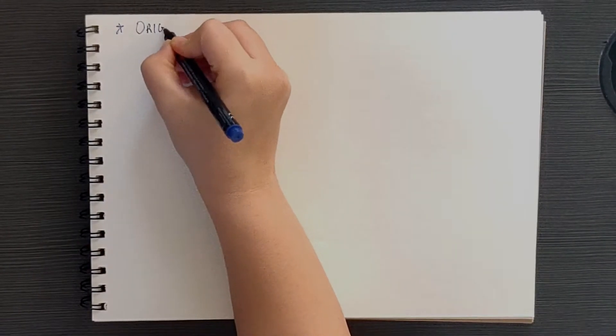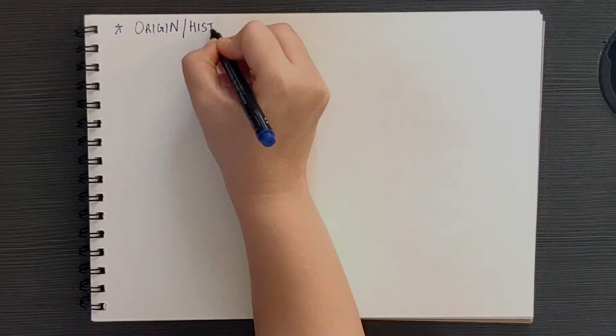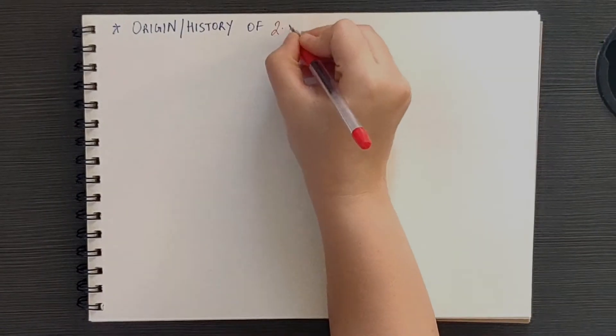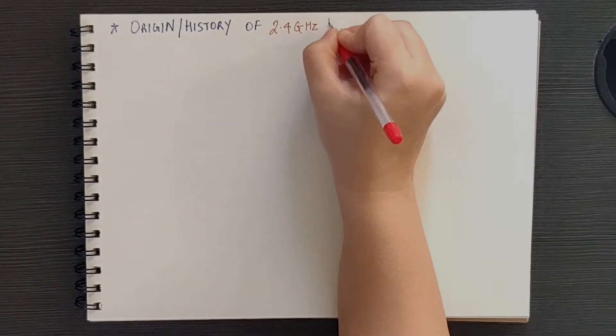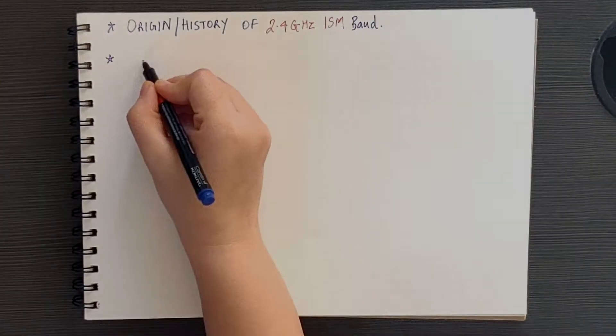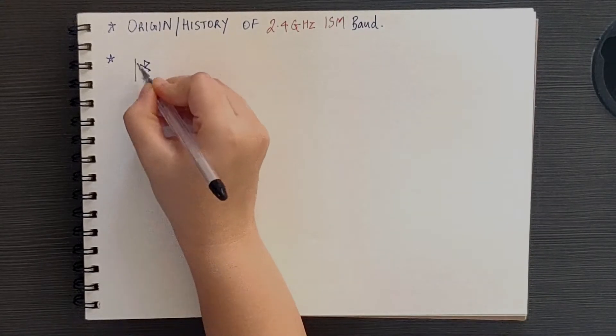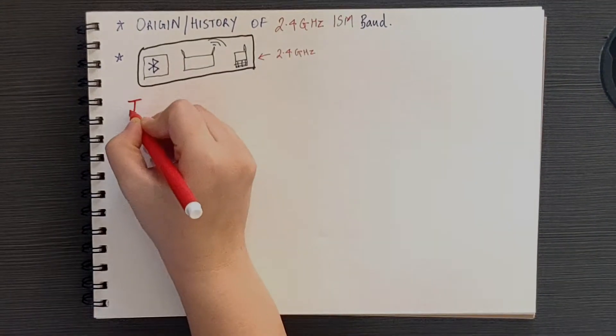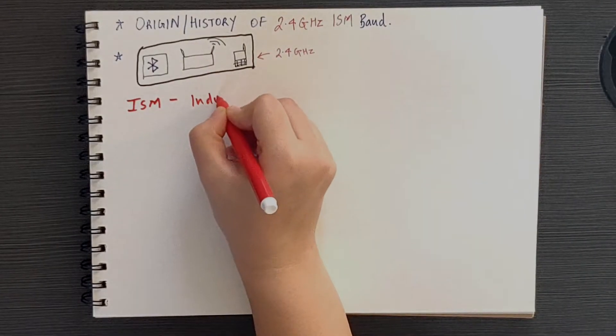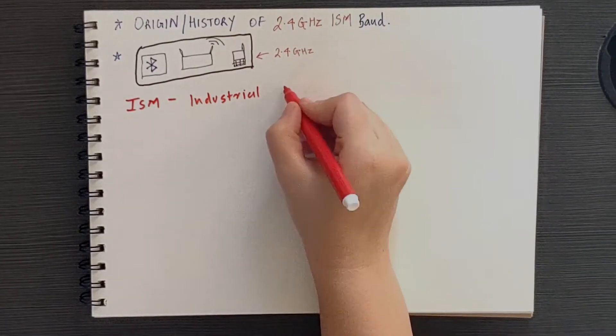Hello world! In today's video, we'll look at the history or origin of 2.4 GHz ISM band and we'll also understand how Bluetooth devices operate or coexist with other devices which use protocols like Wi-Fi, ZigBee, etc. on the same 2.4 GHz ISM band.